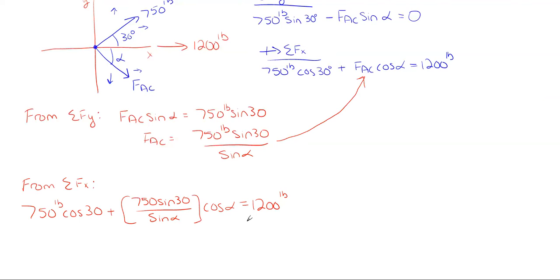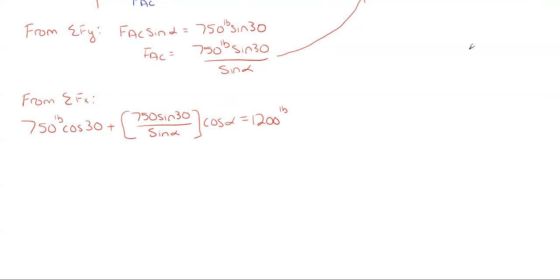Okay, let's do some simplification here and get this simplified down. So what I'm going to do is I'm going to take 750 cosine of 30 and I'm going to take it to the other side, so subtracting off 1200, and then I'm going to simplify this term down. So this term right here becomes 750 and it'll be sine of 30 times the cosine of alpha, and all of that divided by the sine of alpha is equal to 1200 minus off this portion, which comes out to be 550.48.